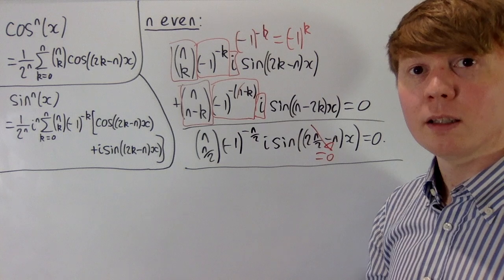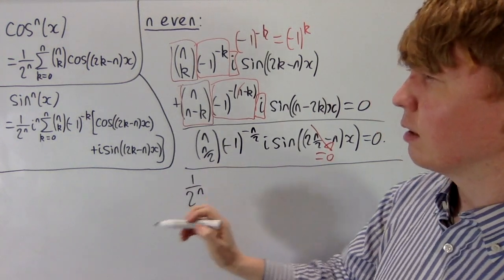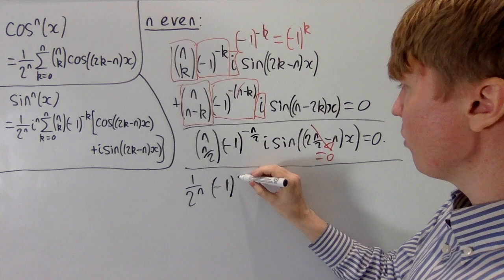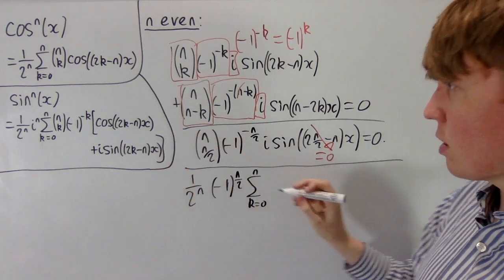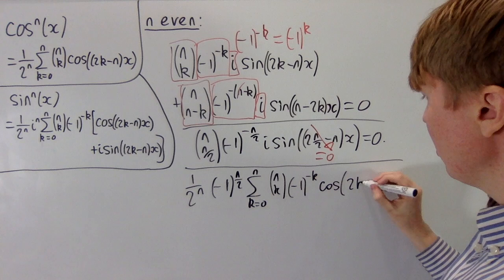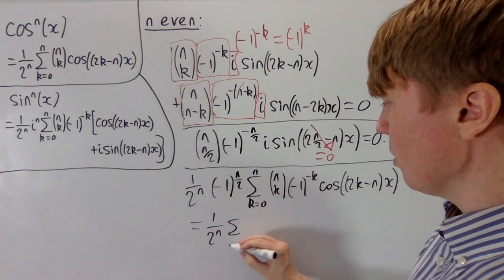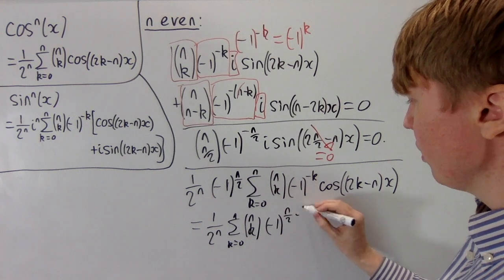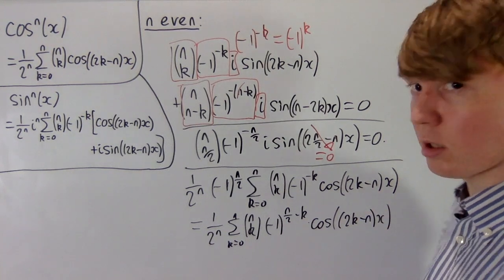So when n is even, sin^n(x) can be written as (1/2^n) times i^n — written as (−1)^(n/2) — times the sum from k=0 to n of C(n,k)·(−1)^(−k)·cos((2k−n)x). In a slightly nicer format: (1/2^n) times the sum from k=0 to n of C(n,k)·(−1)^(n/2 − k)·cos((2k−n)x), which we could integrate term by term.